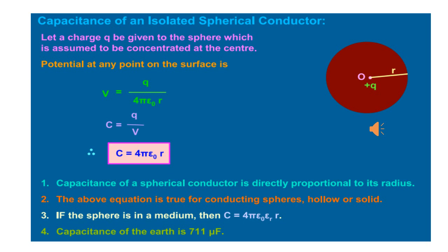From the above expression we can say that capacitance of a spherical conductor is directly proportional to its radius.